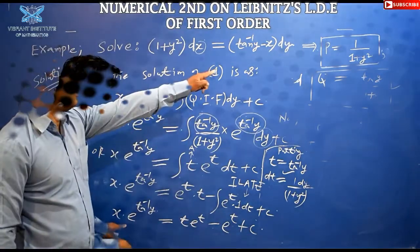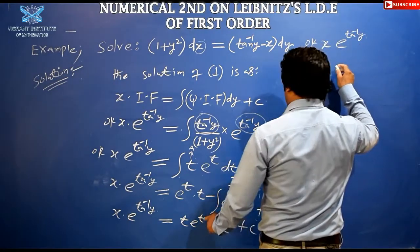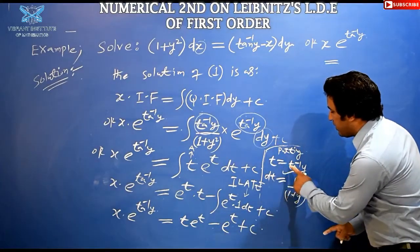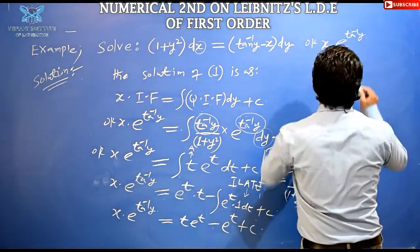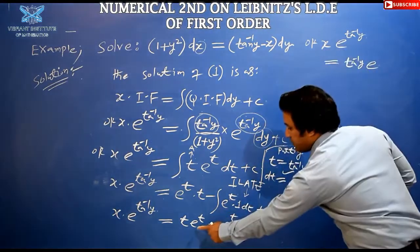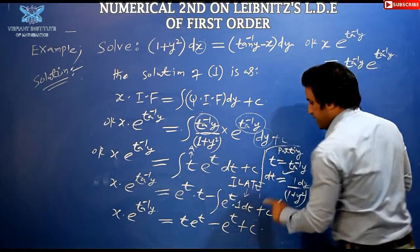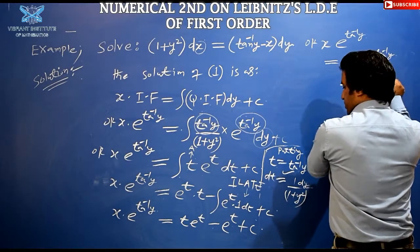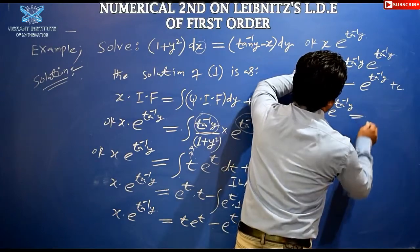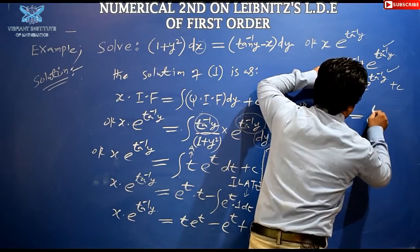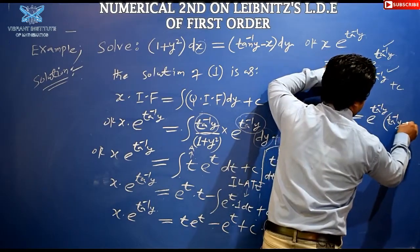Now substituting back t = tan⁻¹y: x · e^(tan⁻¹y) = tan⁻¹y · e^(tan⁻¹y) − e^(tan⁻¹y) + c. We can factor out e^(tan⁻¹y) on the right-hand side, giving: x · e^(tan⁻¹y) = e^(tan⁻¹y) · (tan⁻¹y − 1) + c.